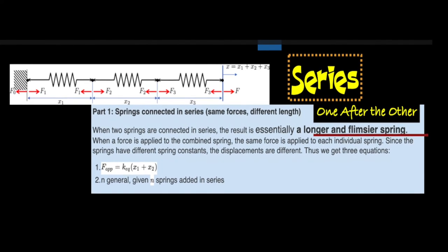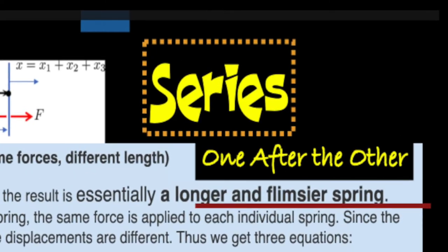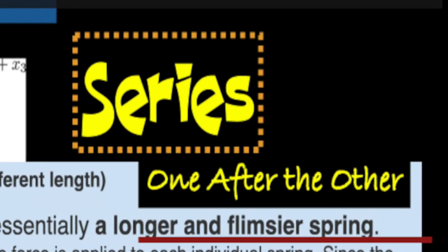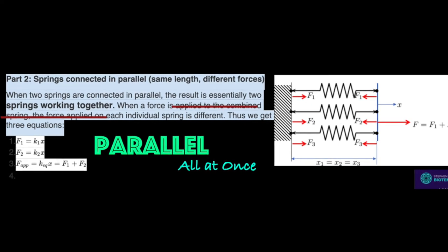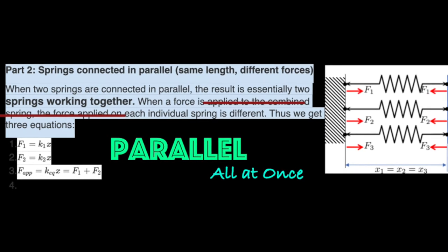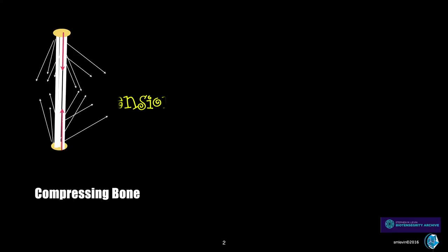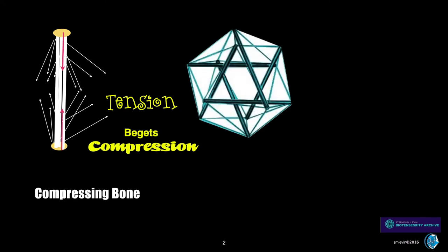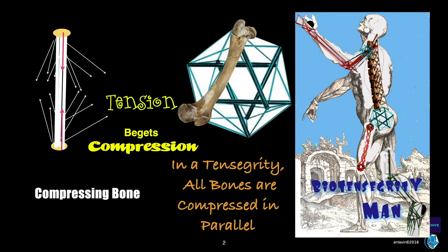Springs spread out in series get longer and flimsier, never stronger than the weakest link. Parallel forces are additive — the more, the merrier. Muscles and bones working together become co-workers rather than agonists and antagonists. If tension begets compression and bones are set in a continuous tension network, then compression elements in a biological tensegrity are compressed in parallel.